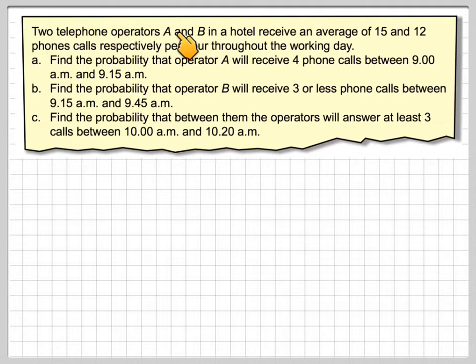We've got two telephone operators, A and B, in a hotel receive an average of 15 and 12 calls respectively per hour throughout the working day.